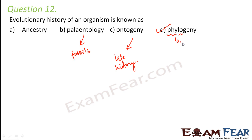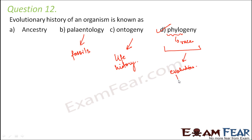So the word phylo is derived from a Greek word which means race. Overall, it talks about the evolutionary history of a race of individuals or a race of organisms.